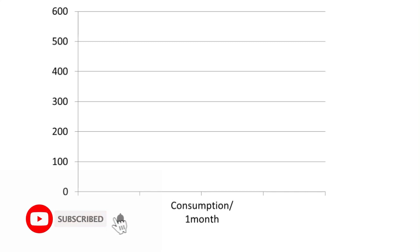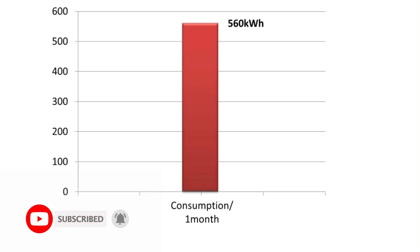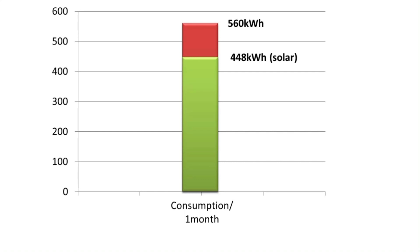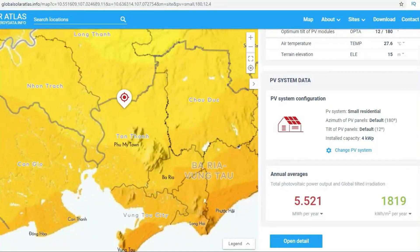Let's say, for example, your home power consumption for 1 month is about 560 kWh. And right now you want to design a solar system that can save up to 80%. It means the solar system will have to produce about 448 kWh. So how do you design a solar system to get exactly this amount in your location? In order to estimate how much electricity a solar system can produce, we can use the Solar Atlas page to estimate.